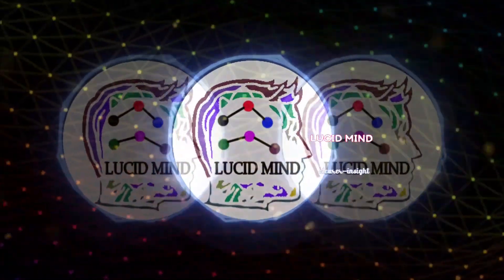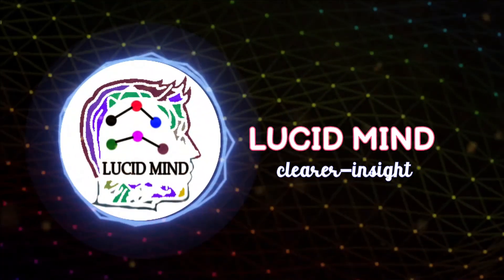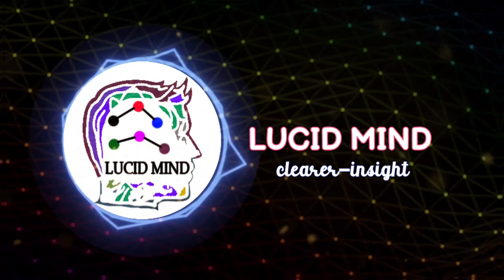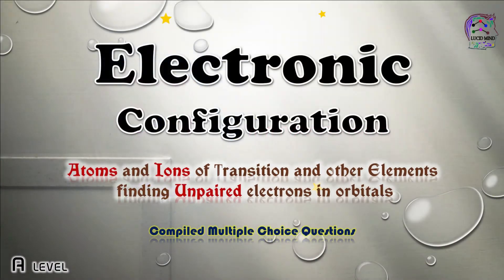Welcome to lucidmind chemistry channel. In this video, I have compiled questions related to the electronic configuration of different transition and non-transition elements and finding unpaired electrons in orbitals.